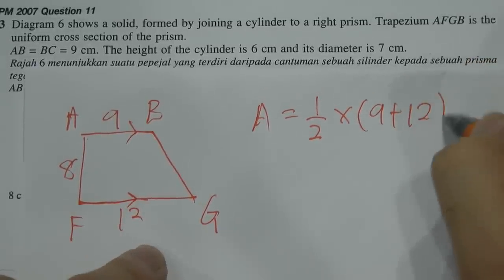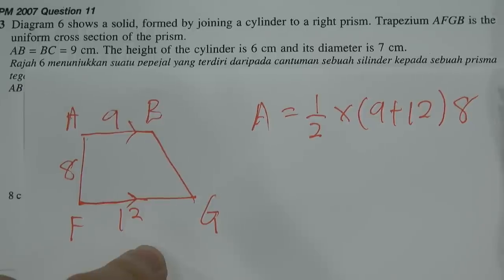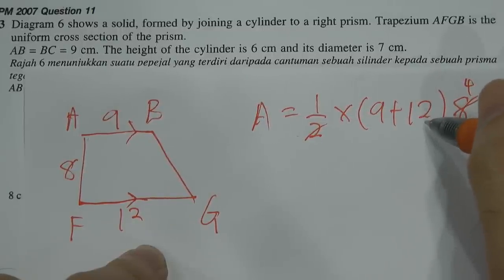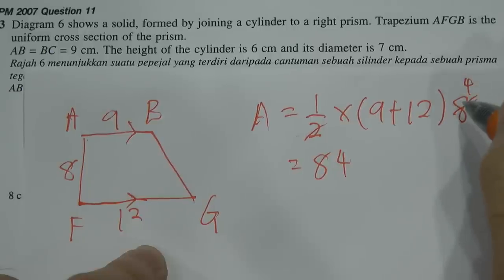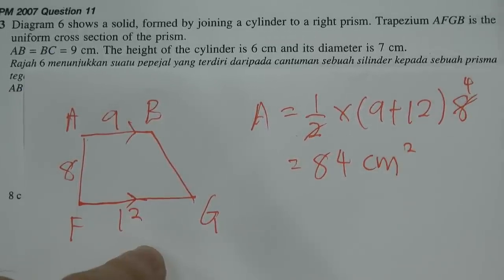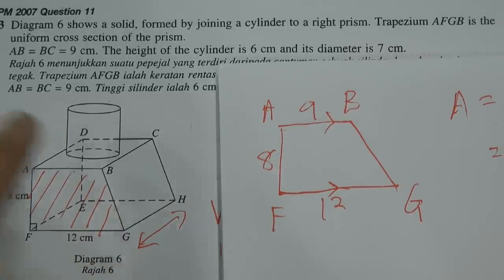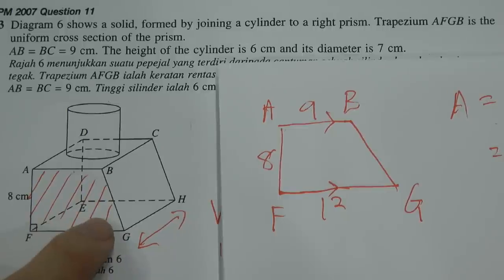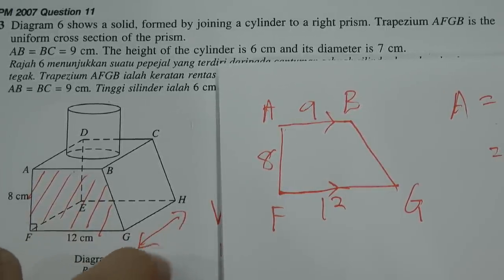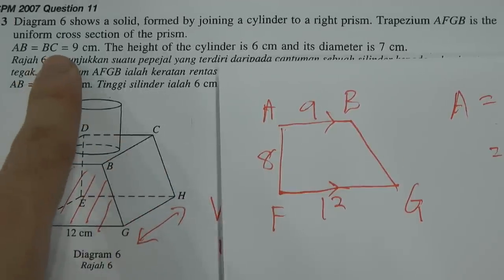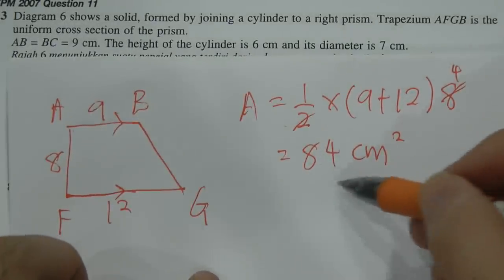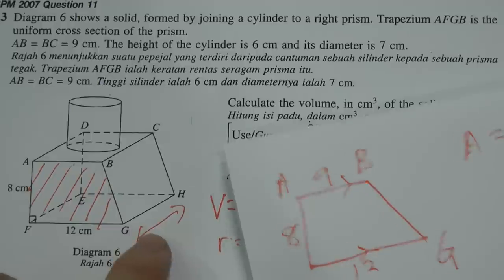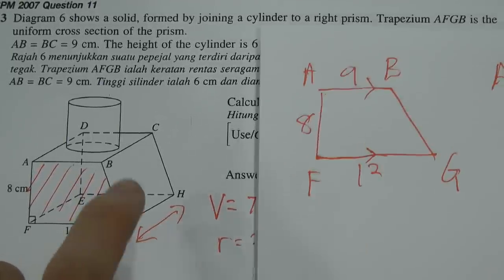So the area equals half times (9 plus 12) times height 8. We simplify 2 and 8 to get 4, and 9 plus 12 equals 21. So 21 multiplied by 4 gives us 84 cm². That is the area of the trapezium. To get the whole volume, we multiply by the height, which is BC equal to 9 centimeters.